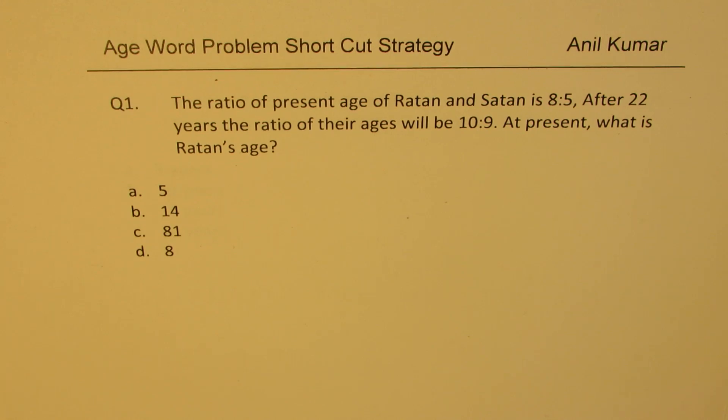Question number one is: the ratio of present age of Ratan and Satan is 8 is to 5. After 22 years, the ratio of their ages will be 10 is to 9. At present, what is Ratan's age? So we're trying to figure out present age when we are given two different ratios. Four options are given to us.